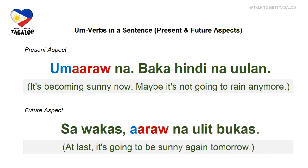Present aspect: Umaaraw na, baka hindi nauulan — 'It's becoming sunny now; maybe it's not going to rain anymore.' Umaaraw na means it's becoming sunny now, baka is maybe, hindi is not, and nauulan means raining. Future aspect: Sa wakas, aaraw na ulit bukas — 'At last, it's going to be sunny again tomorrow.' Sa wakas means at last, aaraw is will become sunny, ulit means again, and bukas is tomorrow.